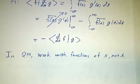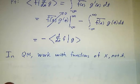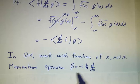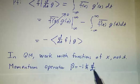And in fact, this comes up a lot in quantum mechanics. In quantum mechanics, we often work with, we call our variable x instead of t. And the momentum operator is minus i times Planck's constant times the derivative with respect to x.